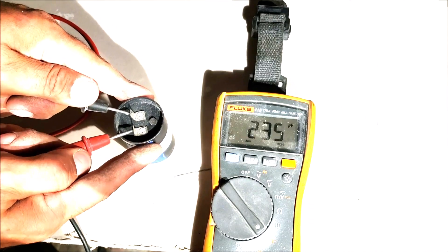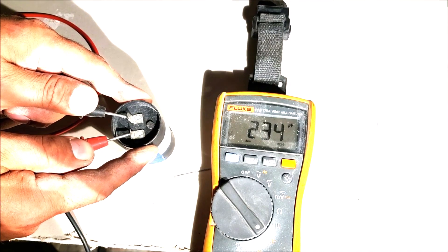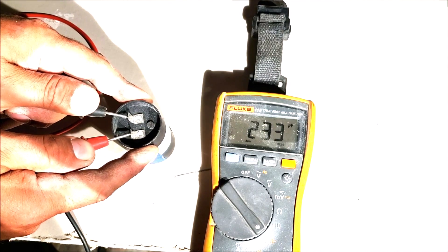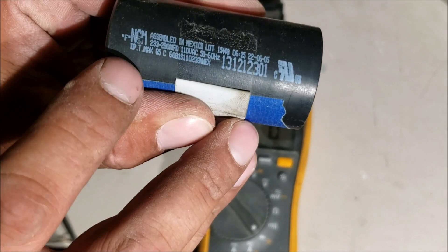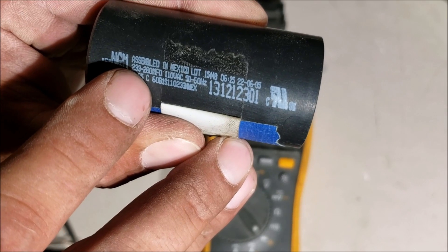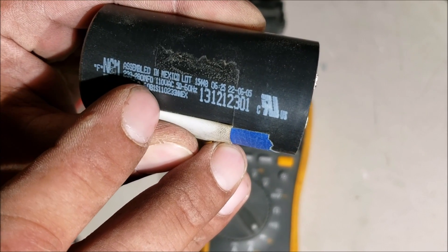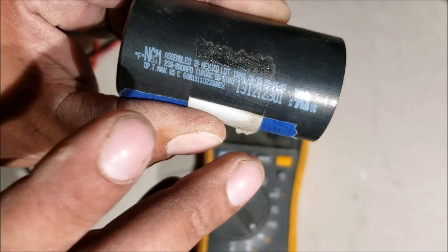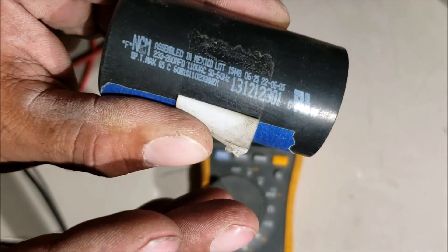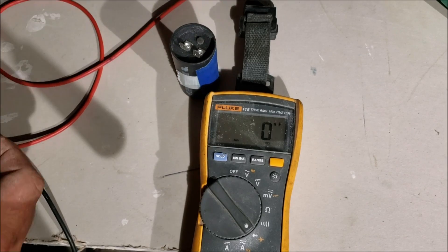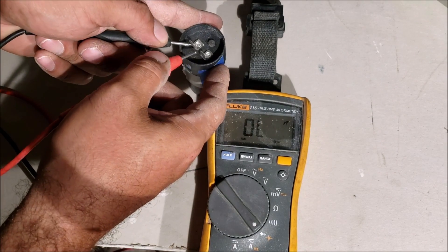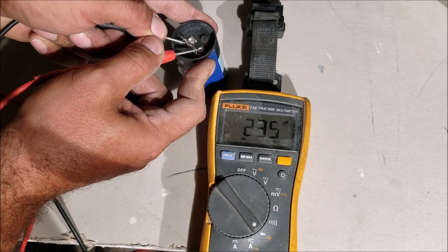You got to look on your capacitor and hopefully the numbers are still there. We're looking for numbers that look like that. We got 233 to 280 mfd, that's microfarads, so that's giving us our range. We have to be in that range for this to be a good capacitor. We got 235, 234, so the capacitor is good.